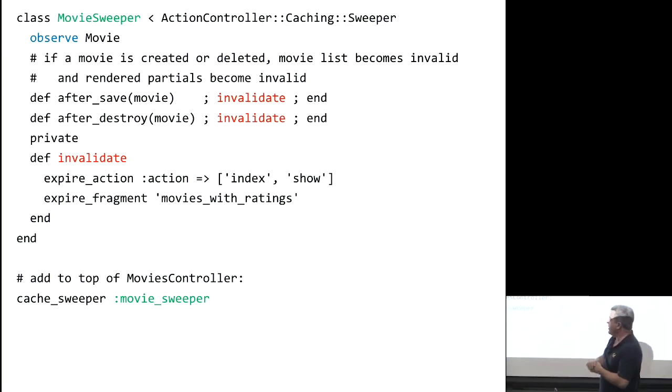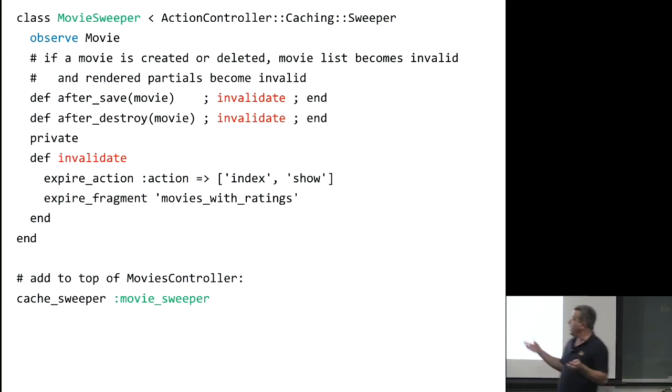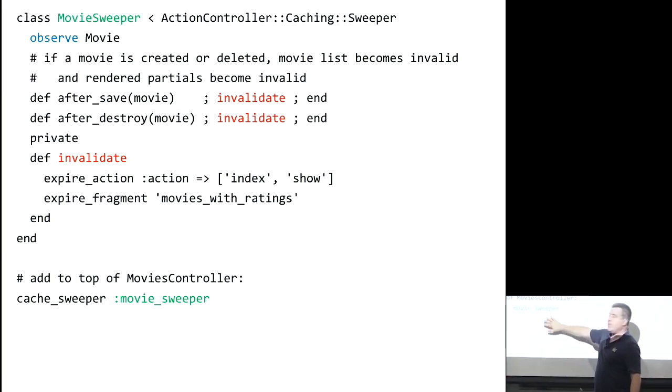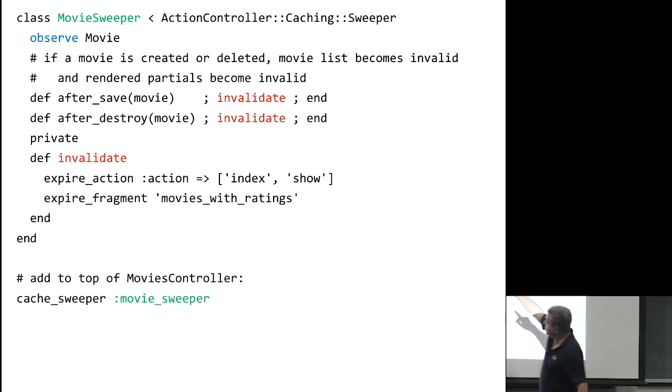Also, if I was using the fragment cache like I had the example in the previous slide where every time I render the list of movies with ratings, I'm caching the results of each one of those fragments, I also need to expire all the fragments. So since in my example, the entire collection of fragments was saved under a single name, I just call expire fragment with that name and that blows it away. And then at the top of movies controller, you just say, by the way, you're going to be cached. And this is the line that will essentially trigger the loading of the movie sweeper and installing the hooks to observe the movie and all that stuff. So it's actually fairly clean. It's a nice separation of concerns. All of the information about what is to be cached, when it is to be invalidated, and how the invalidation happens, that's all in this separate class called movie sweeper. The controller and the movie model don't have to know anything about it.